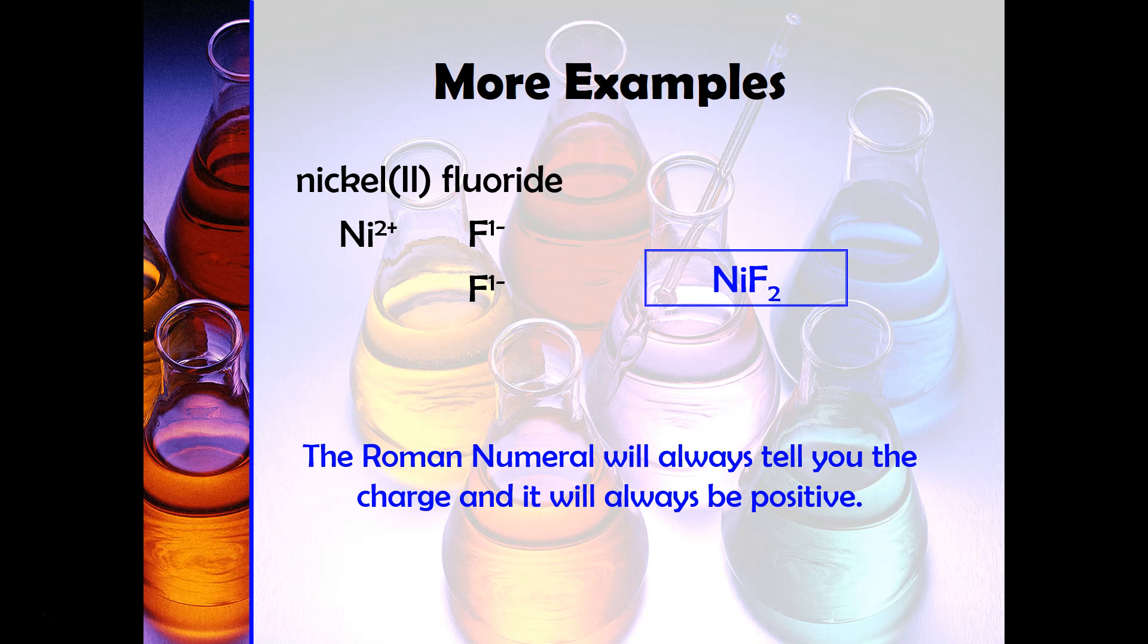So whenever you have a Roman numeral that makes it really easy in order to write what the charge is going to be. You may say Miss Raz why do you need a Roman numeral? Well that's something that we're going to talk a little bit about later but basically there are some elements that depending on what they're combining with and under what conditions they combine with they could have more than one possible charge. And so nickel in particular could be nickel two with a plus two charge or it could be nickel three with a plus three charge and so that's why we need to have the Roman numeral.